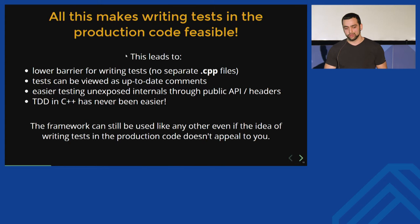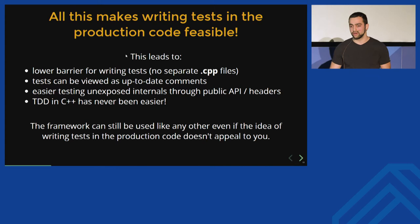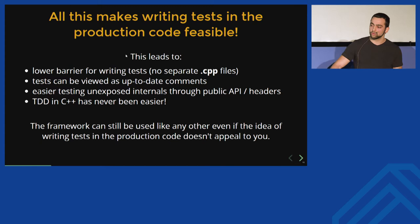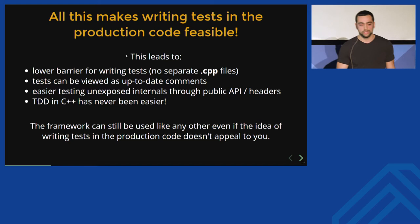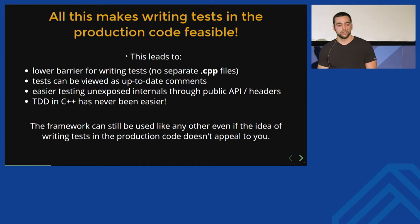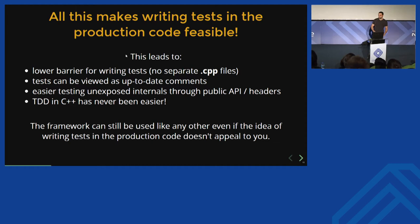All this makes writing tests in the production code feasible, which in turn leads to the following: you don't have to make separate source files, commit them to source control, add them to the build system, and include a bunch of things. You can just write the test for some module at the end of its implementation file in place. Tests can be viewed as up-to-date comments because when you compile your production code, you compile also the tests — so they're always up-to-date. Some companies have problems testing unexposed internals because they're not exposed through their public APIs. Writing tests in place in the implementation solves that. Test-driven development in C++ becomes pretty straightforward with this. And even if you don't like the idea of mixing tests and production code, you can still use the framework like any other and benefit from the fast compile times and clean design.